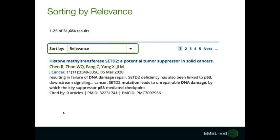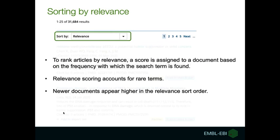You can also sort your results by relevance. In relevance sorting, a score is assigned to a record based on the frequency with which the search terms are found. Rare words are weighted higher than common ones, and stop words like 'and', 'or', and 'are' are ignored. A weighting factor is also applied based on publication date, so newer documents are most likely to appear higher in the result list.